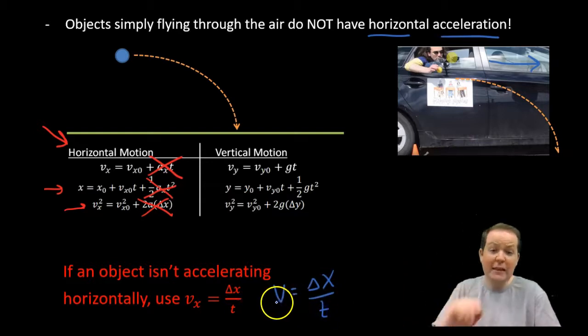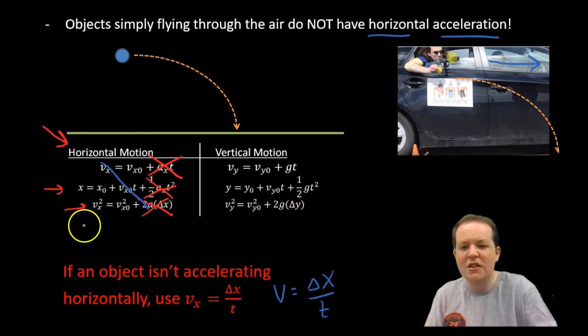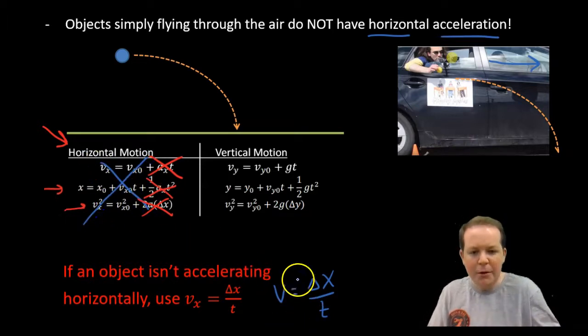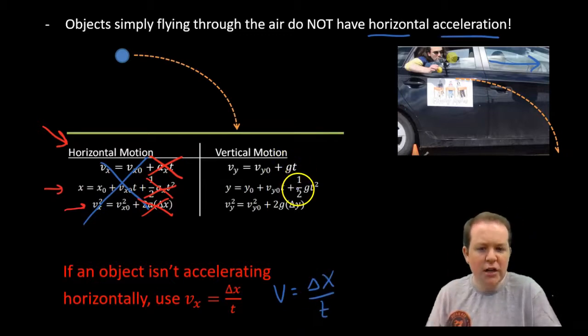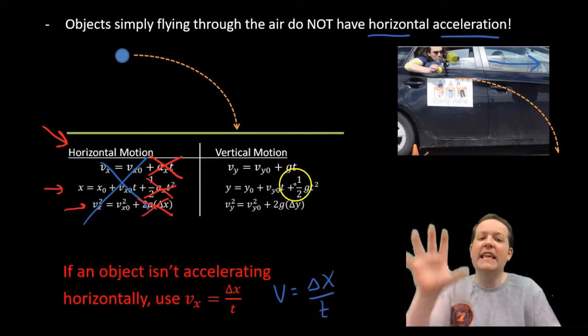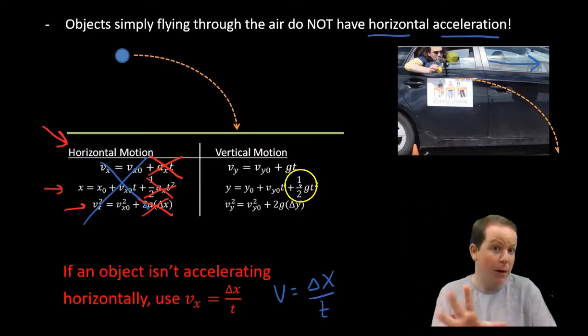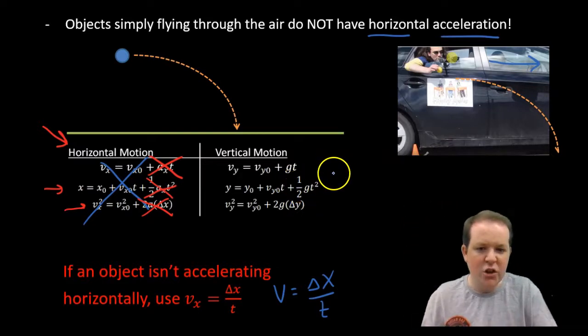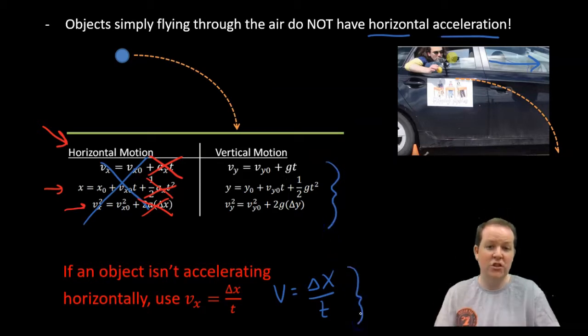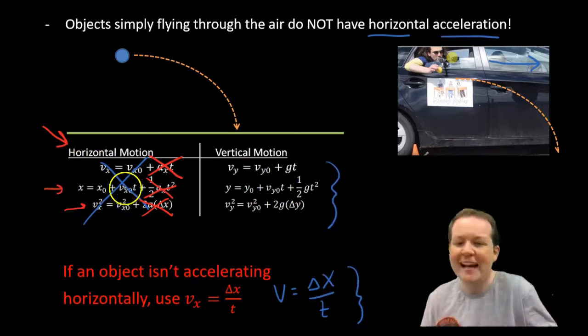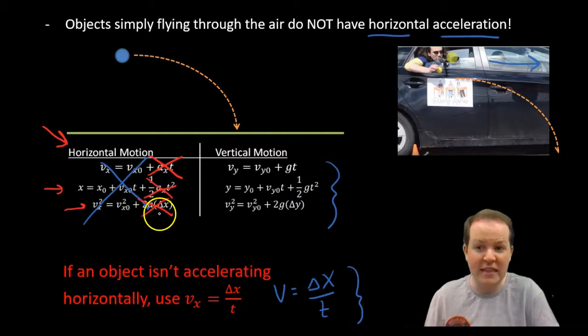If something is not accelerating, obviously we're not going to worry about these acceleration equations. We can just use our basic equation for velocity. Velocity equals displacement divided by time. Because if it's not accelerating, the velocity is staying the same. So we can almost not use these equations, but just use this much simpler equation. Can I use that for vertical motion? No. Because it is accelerating down. Remember, gravity is pulling it down. So you would use these equations combined with this equation. Not easy, but easier than also having to use these three things.